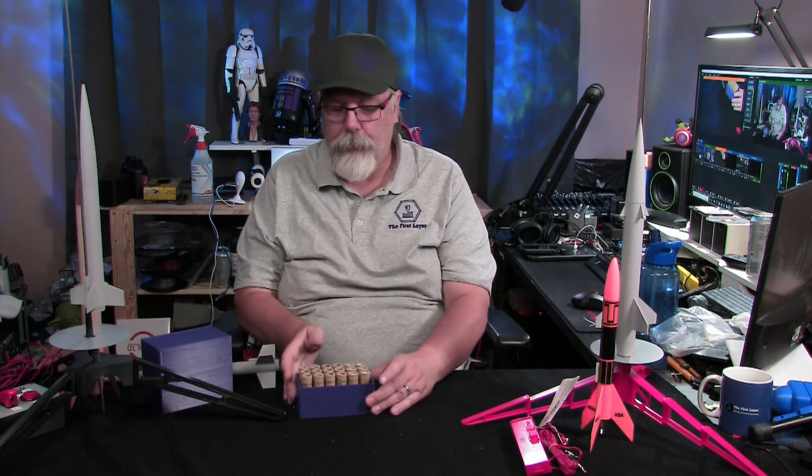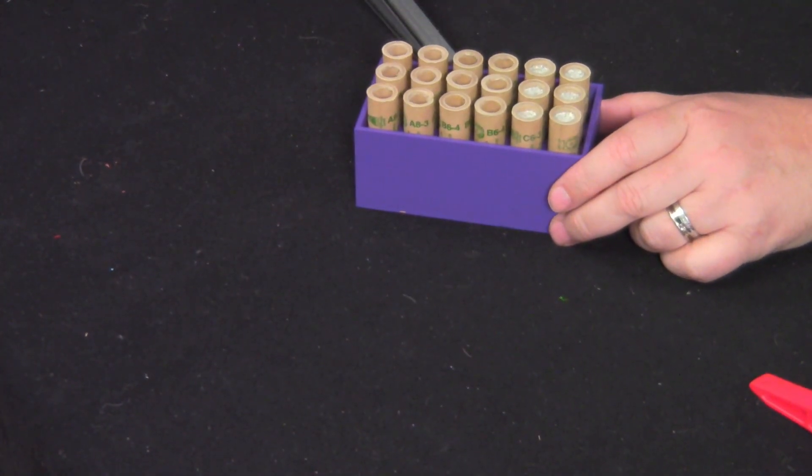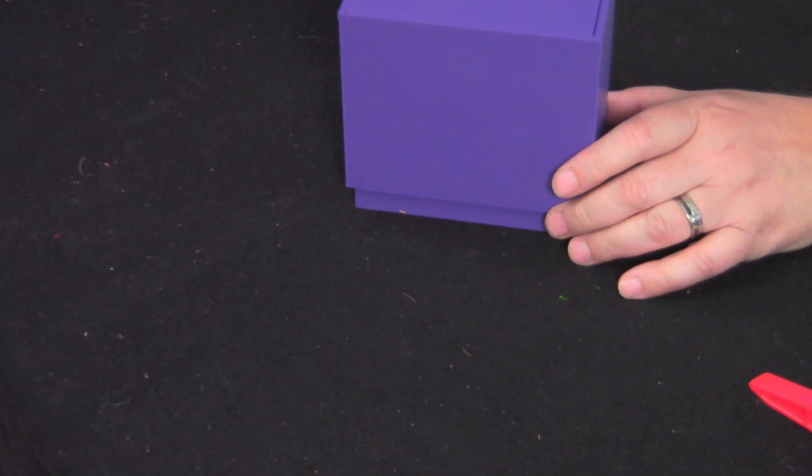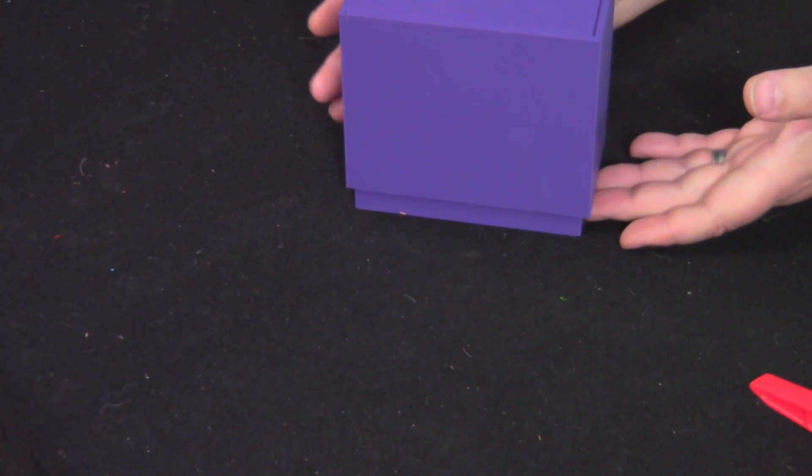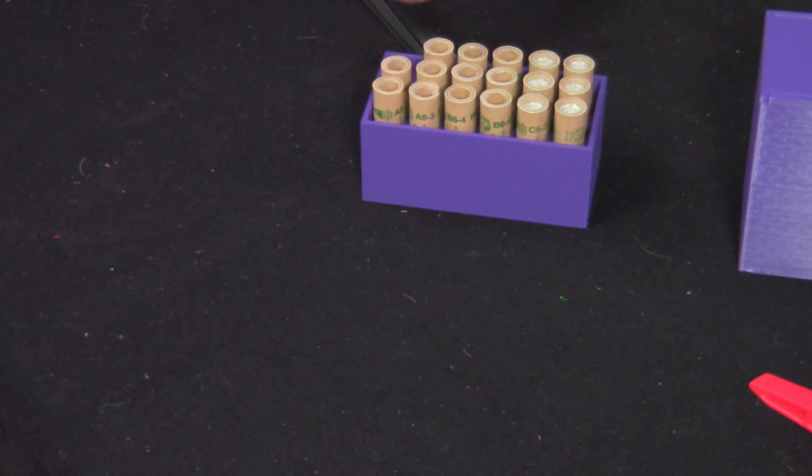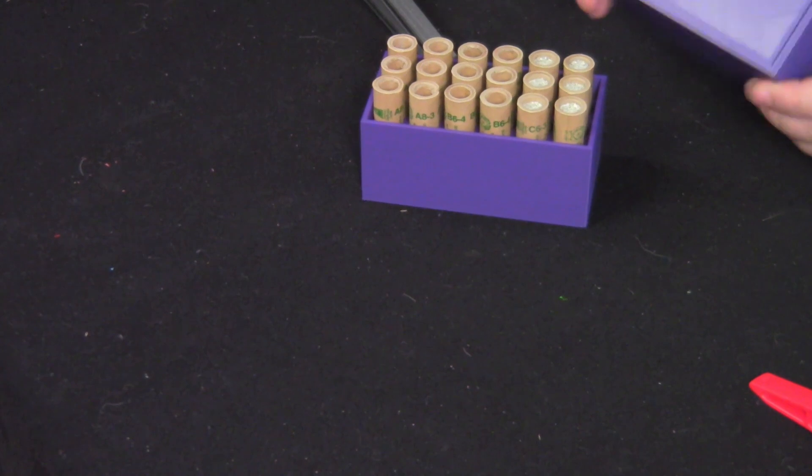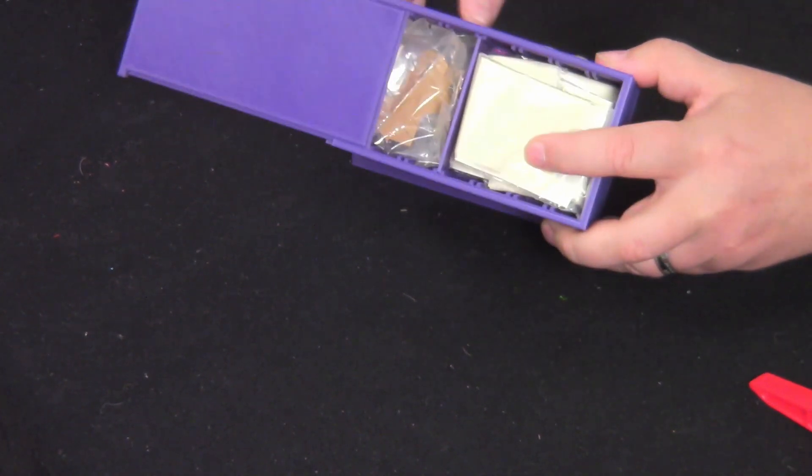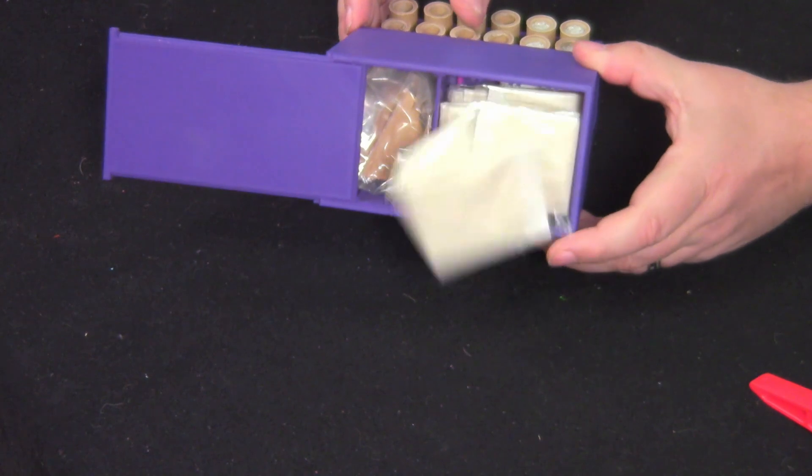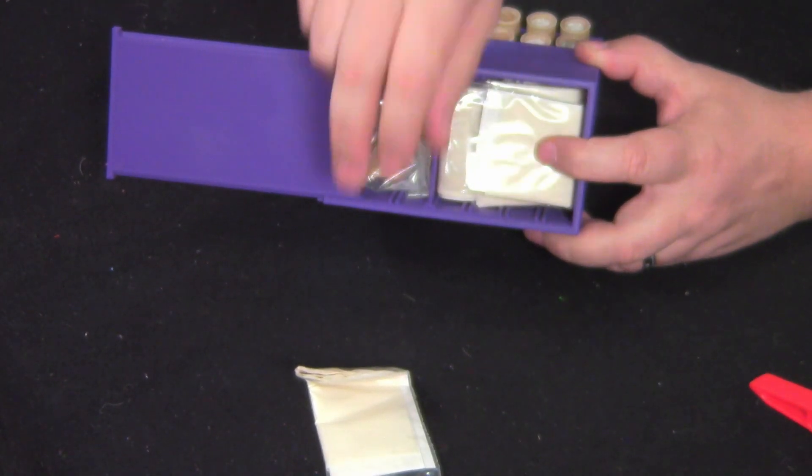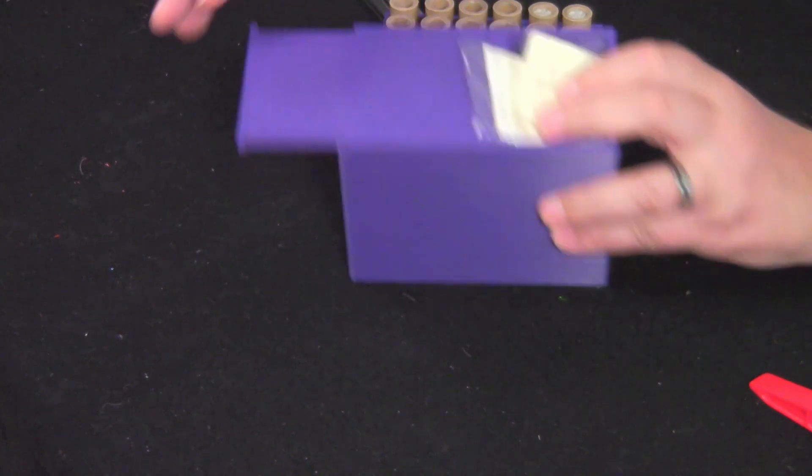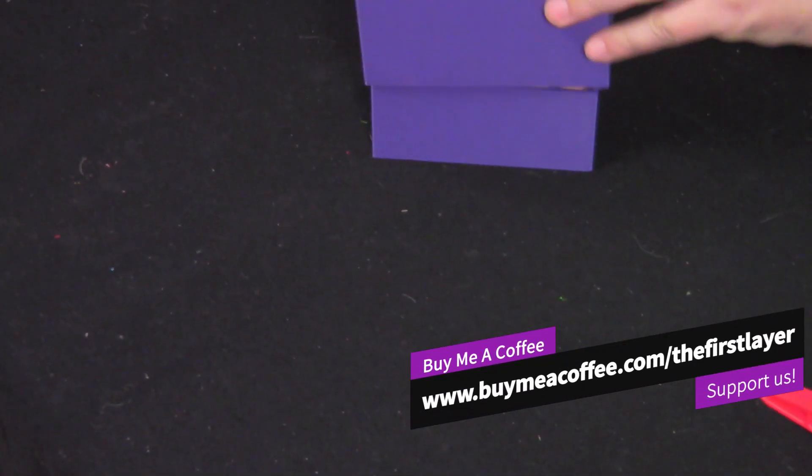The other thing that I did was I printed out this little box, and I'll go back to a close-up of this. Here we have basically an engine box. Again, this is one of those things that I found on Thingiverse, just like the rocket stand, and like two of the rockets. Basically, you put your engines in the bottom. These are for 18mm engines. Then, in the top section, you have a place to hold all of your wadding and your igniters. Just toss that back in there. Close it up.